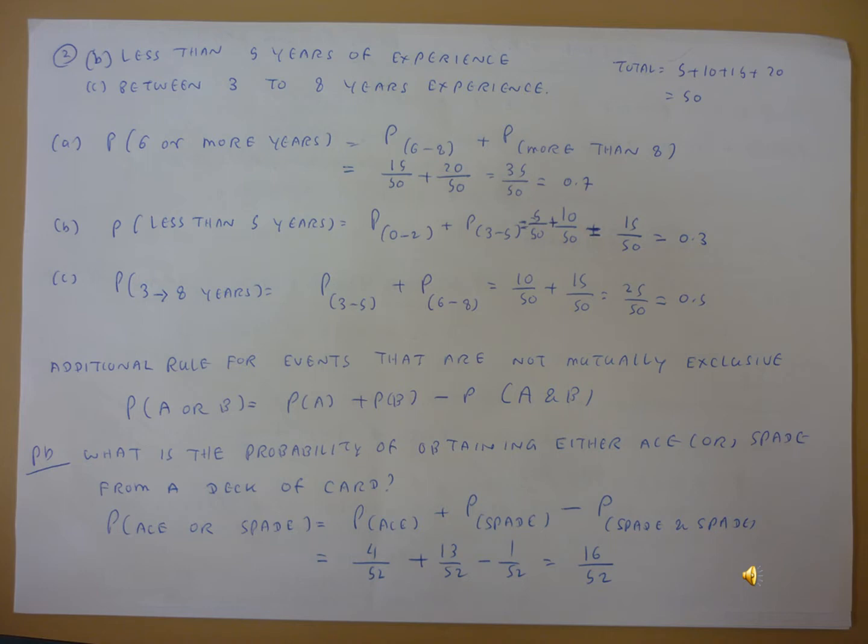P(spade and ace) is only one card, so this is the probability of 1 by 52. So we calculate P(ace or spade) equals P(ace) plus P(spade) minus P(ace and spade). That's 4 by 52 plus 13 by 52 minus 1 by 52, which equals 16 by 52.